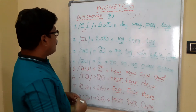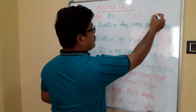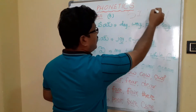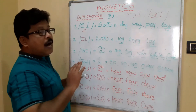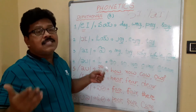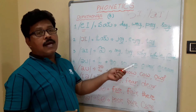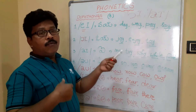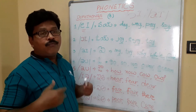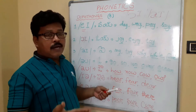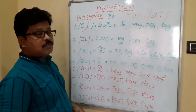The third diphthong: if you write small letter A and I, this is the symbol for the /aɪ/ sound. Examples: my, try, why, sigh, sign, fine, dime.